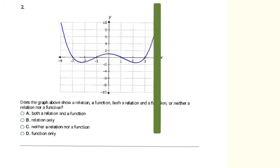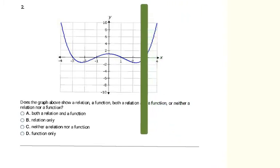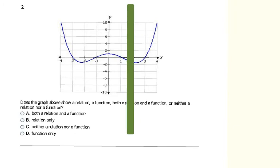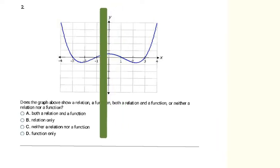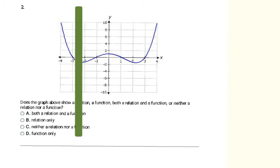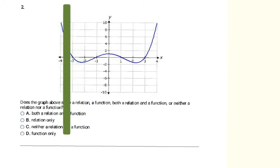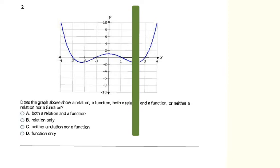In this next example, I move my vertical line along the graph and wherever I place it, it only touches the graph in one spot. As I move it across the whole graph it continues to only touch at one point. Because a vertical line only touches it once, it's a function. And remember, any function is also a relation, so this one is both a function and a relation.